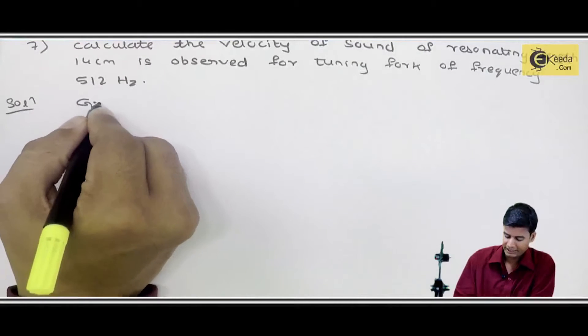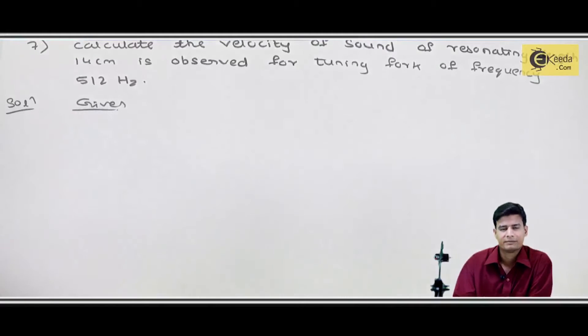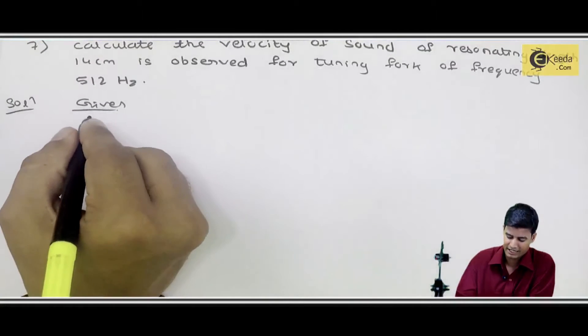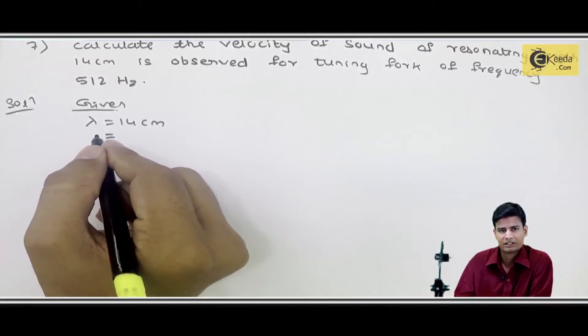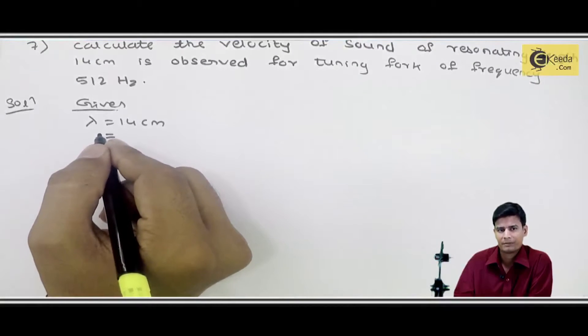512 hertz. Here resonant length means wavelength lambda gives me 14 cm, so lambda will be converted from cm, so 14 into 10 to the power minus 2 meter.